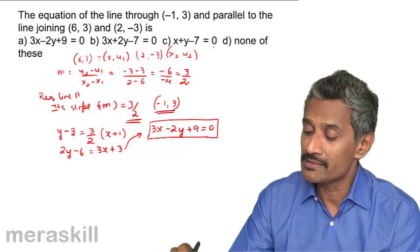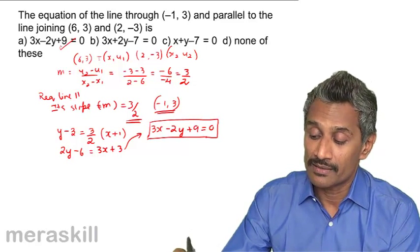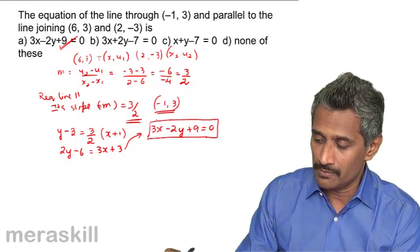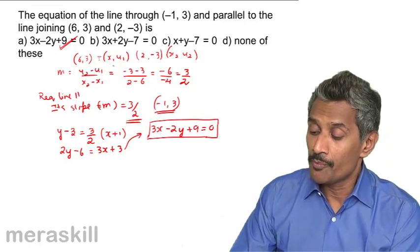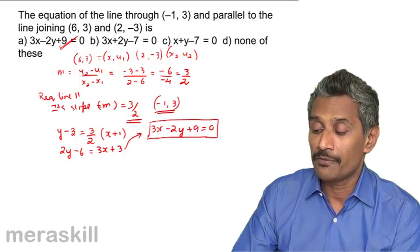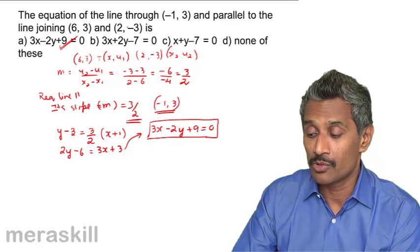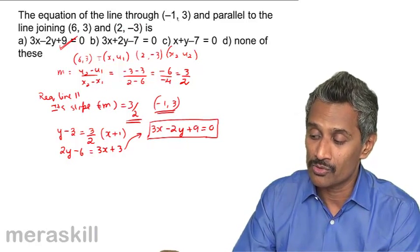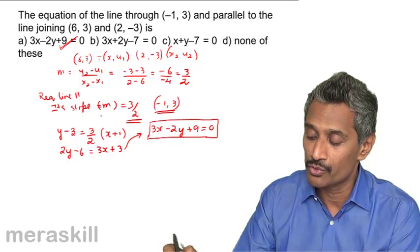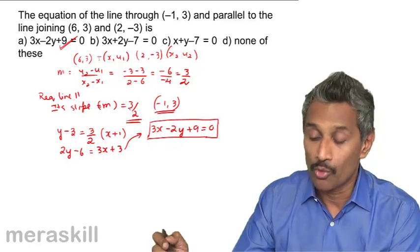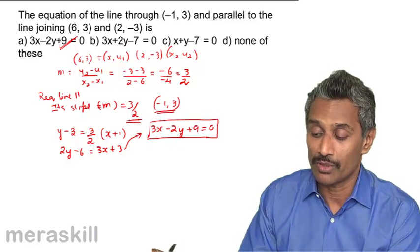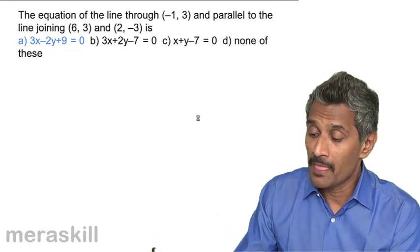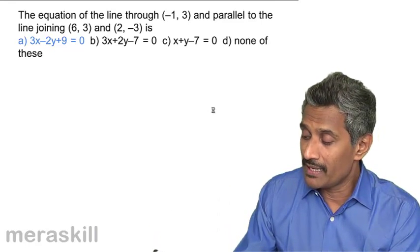Among the options, the answer is 3x minus 2y plus 9 equals 0. To summarize: with the two given points we found the slope, the required line is parallel so its slope is the same, and using point-slope form we get the equation 3x minus 2y plus 9 equals 0.